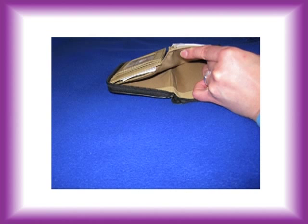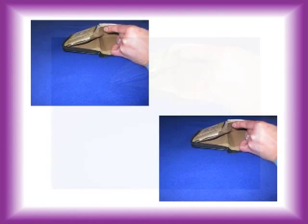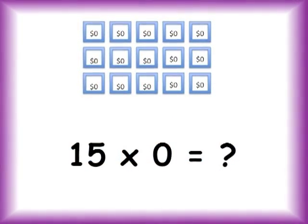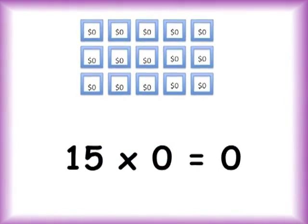If you have one wallet with zero dollars, you have zero dollars. If you have two wallets with zero dollars, you have zero dollars. And if you have 25 wallets with zero dollars, you still have zero dollars. This works with any number. Try it! What is 15 times zero? You're right, it's zero.